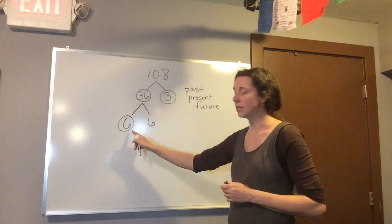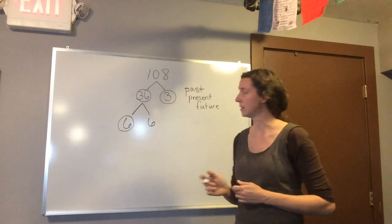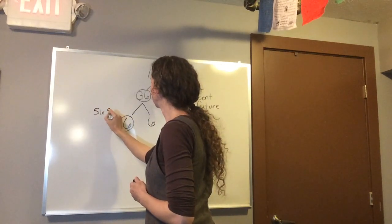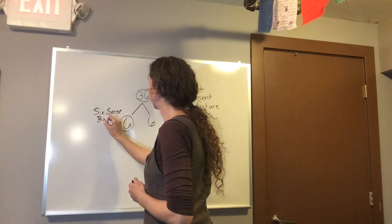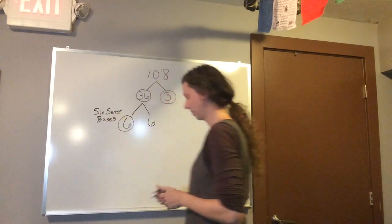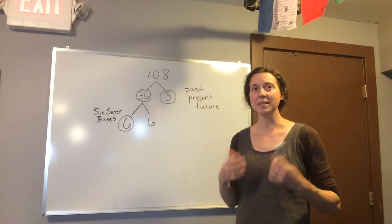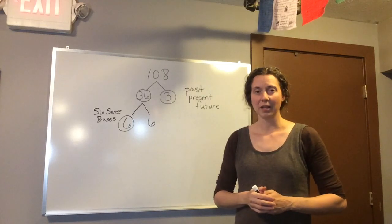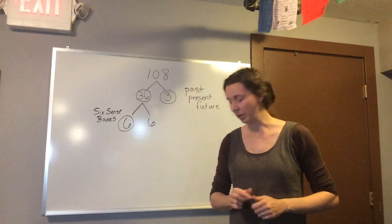In Buddhism, this 6 represents the 6 sense spaces. The 6 sense spaces are the ways that we interact with our world around us. That equals the 5 senses that we're most familiar with.